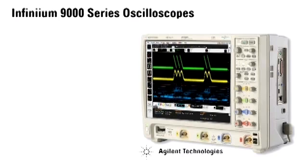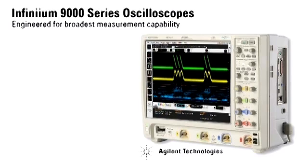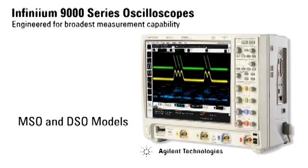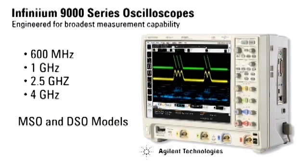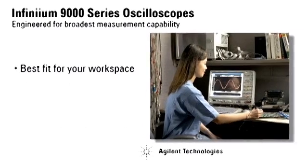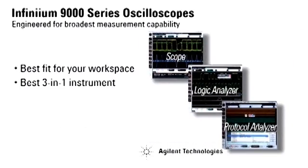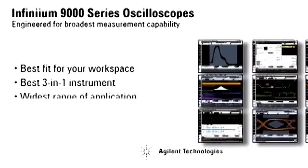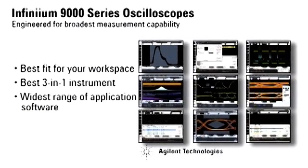Agilent Infinium 9000 series oscilloscopes are engineered to give you the broadest measurement capability. Available in MSO and DSO based models with analog bandwidths up to 4 gigahertz, these scopes cover a more extensive range of test needs than any other scope on the market. We do it by offering the best fit for your workspace, the best three-in-one instrument, and the widest range of application software.